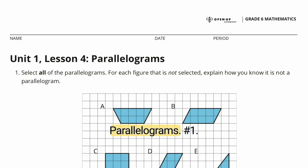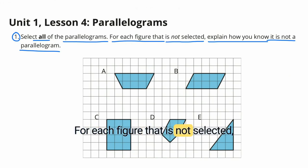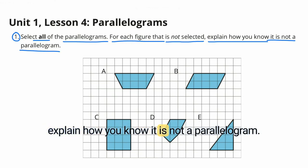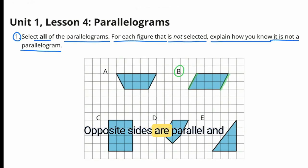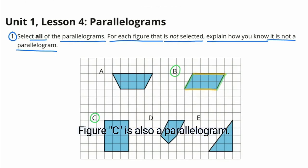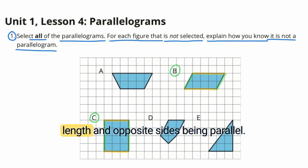Unit 1, Lesson 4, Parallelograms, Number 1. Select all of the parallelograms. For each figure that is not selected, explain how you know it is not a parallelogram. Figure B is a parallelogram — opposite sides are parallel and opposite sides are the same length. Figure C is also a parallelogram, with opposite sides being the same length and opposite sides being parallel.